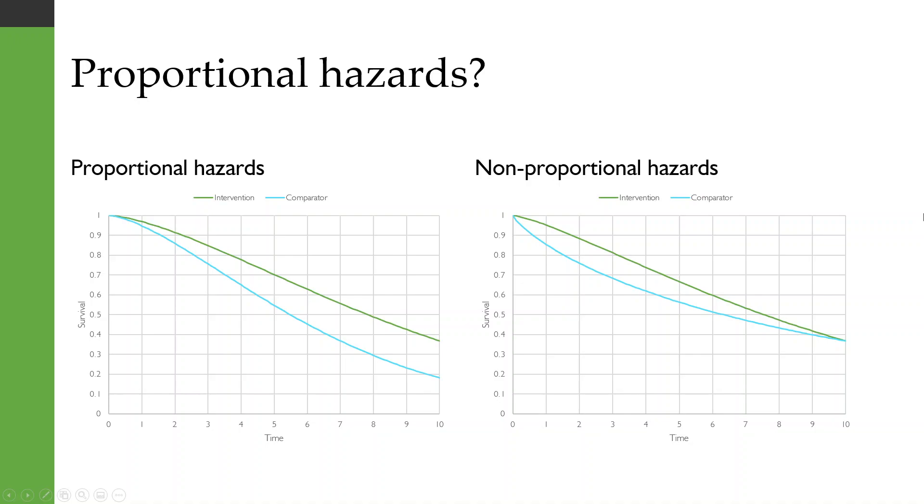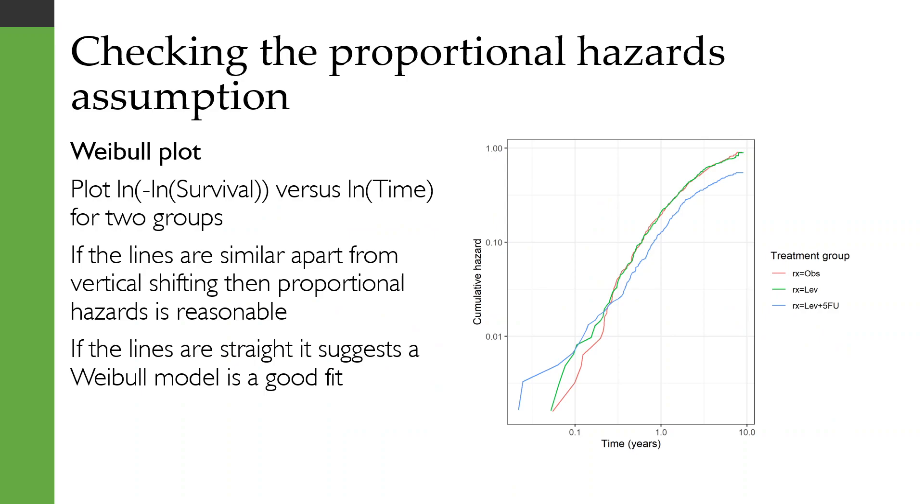Okay, but it's not necessarily very easy to just look at these survival curves and tell whether proportional hazards is a reasonable assumption. So there are some other ways that you can look at it.